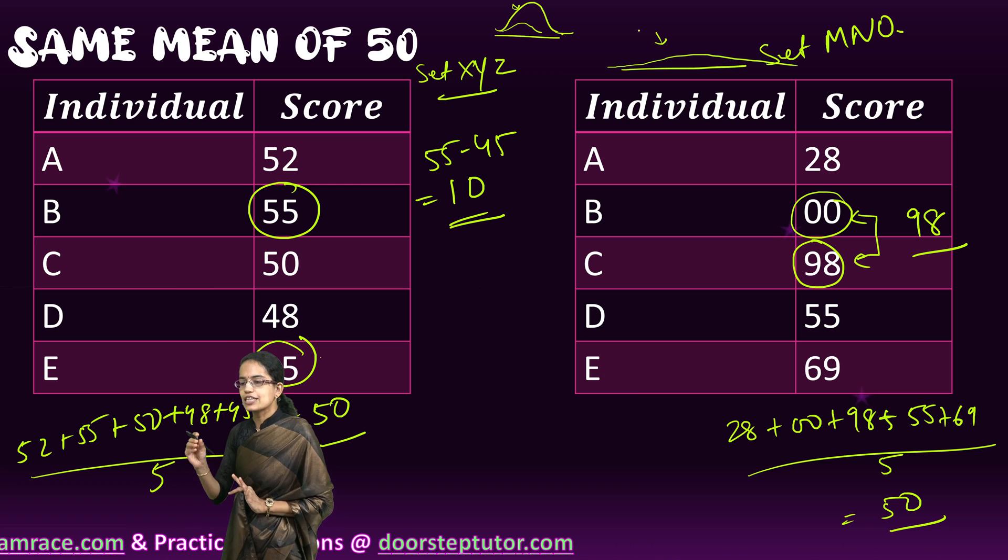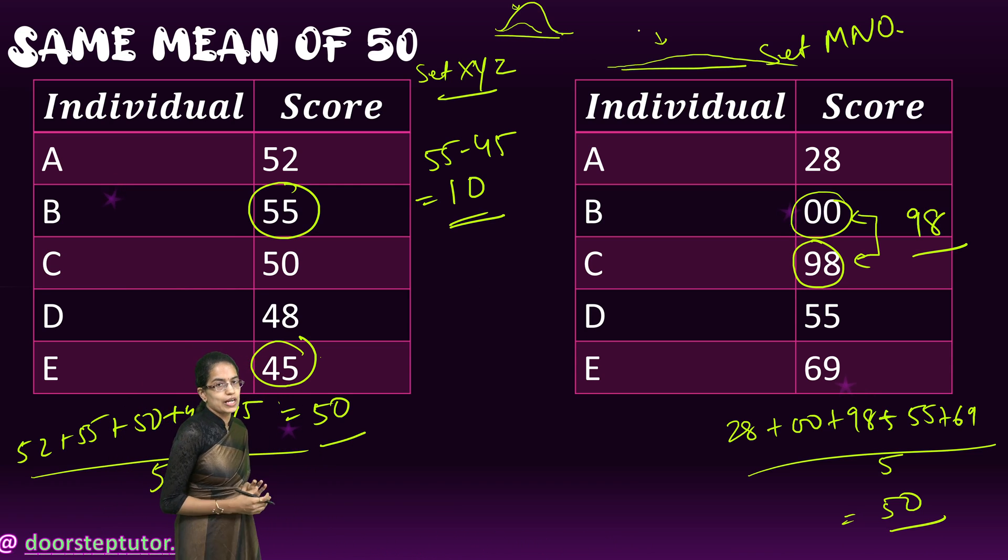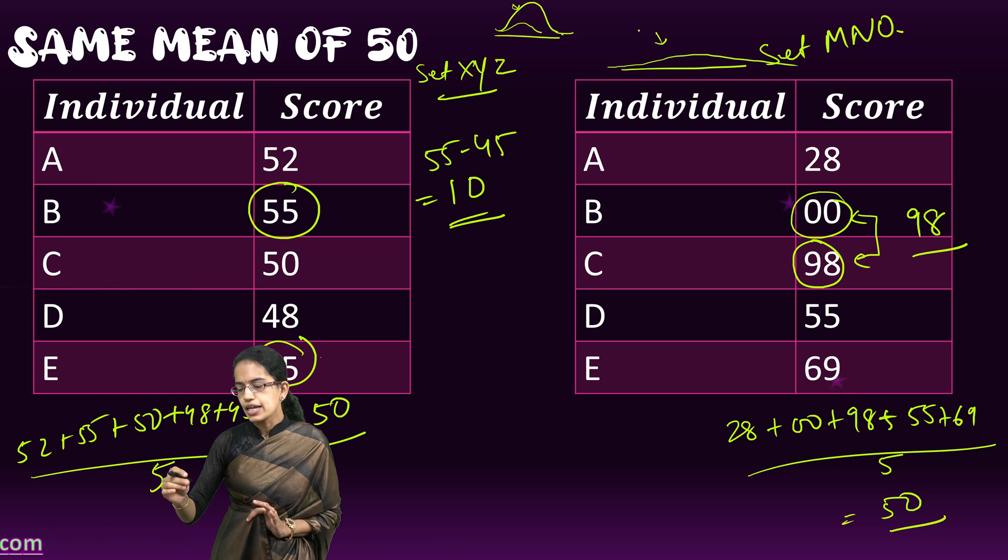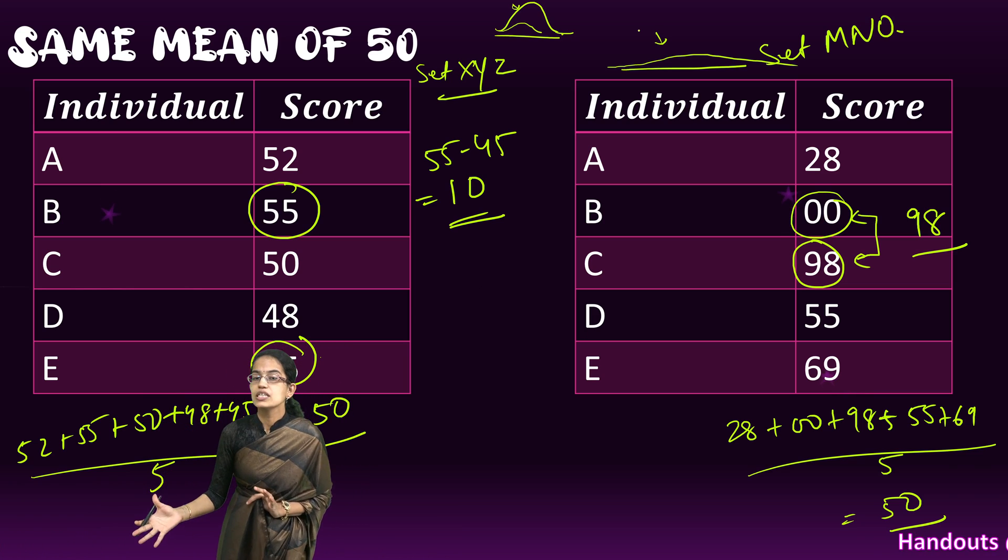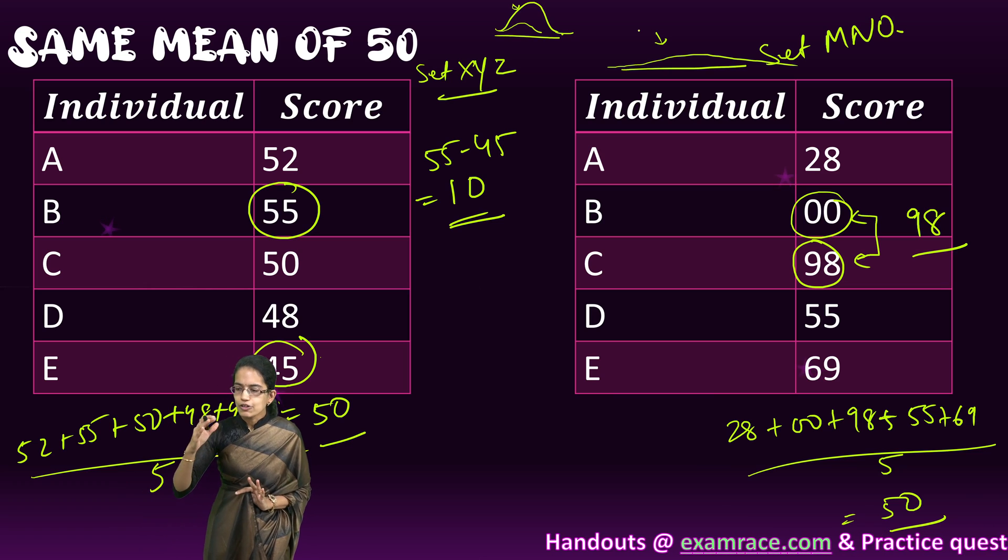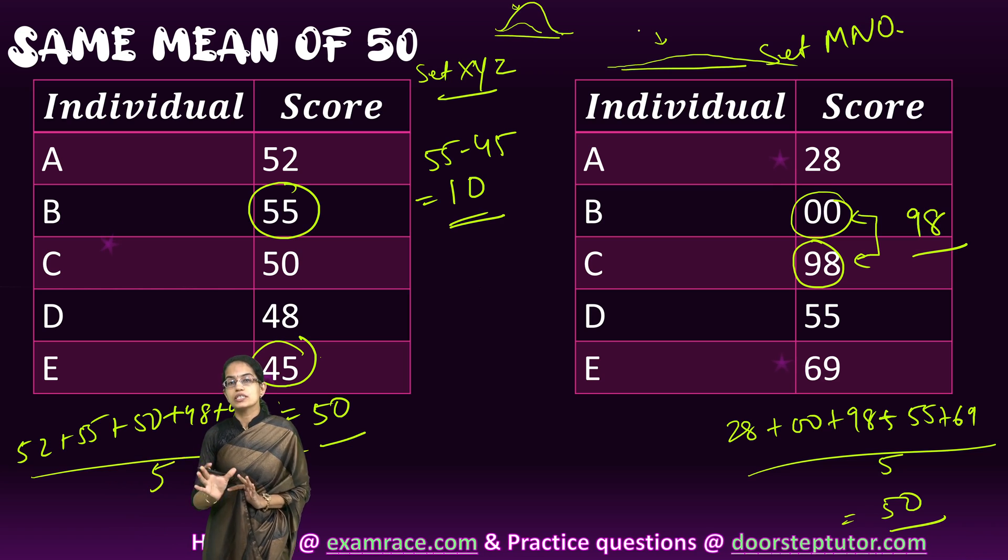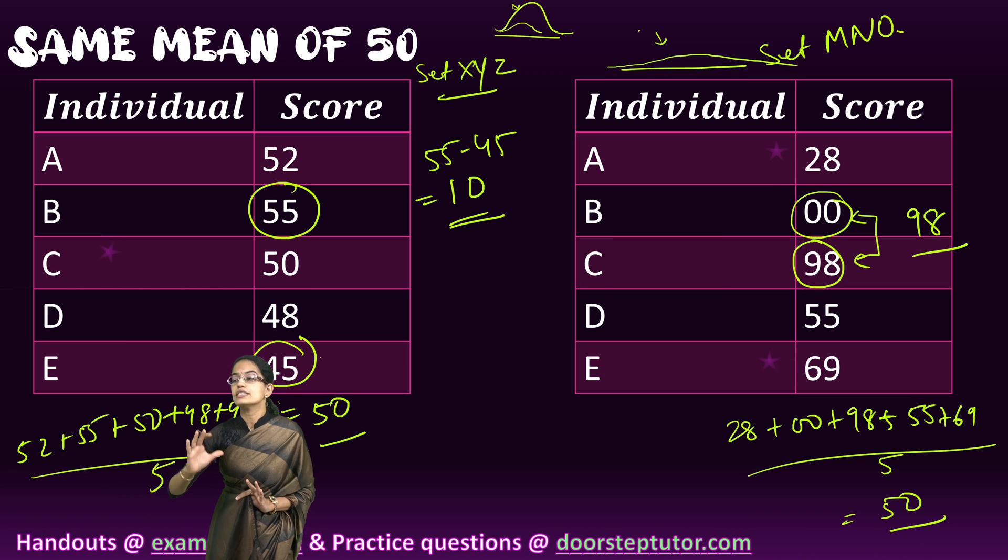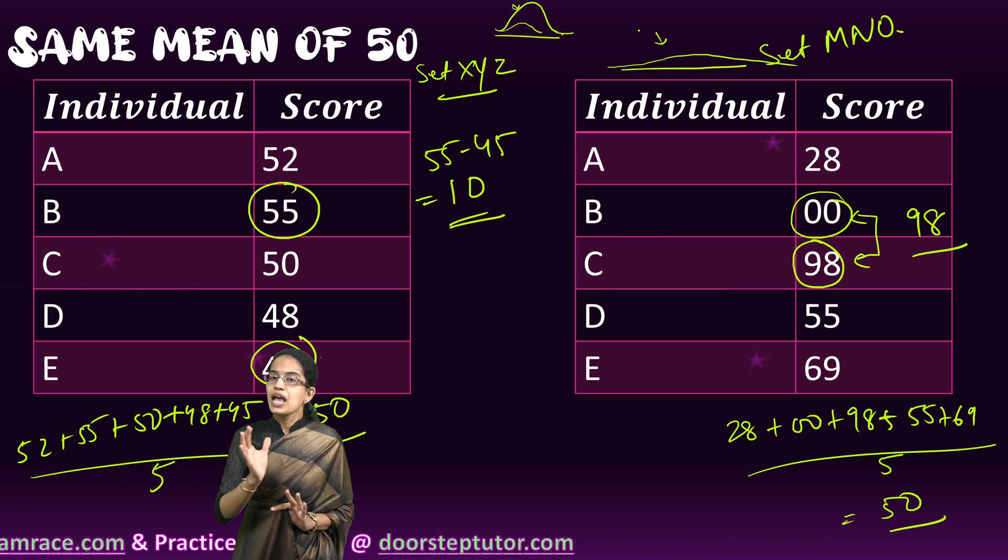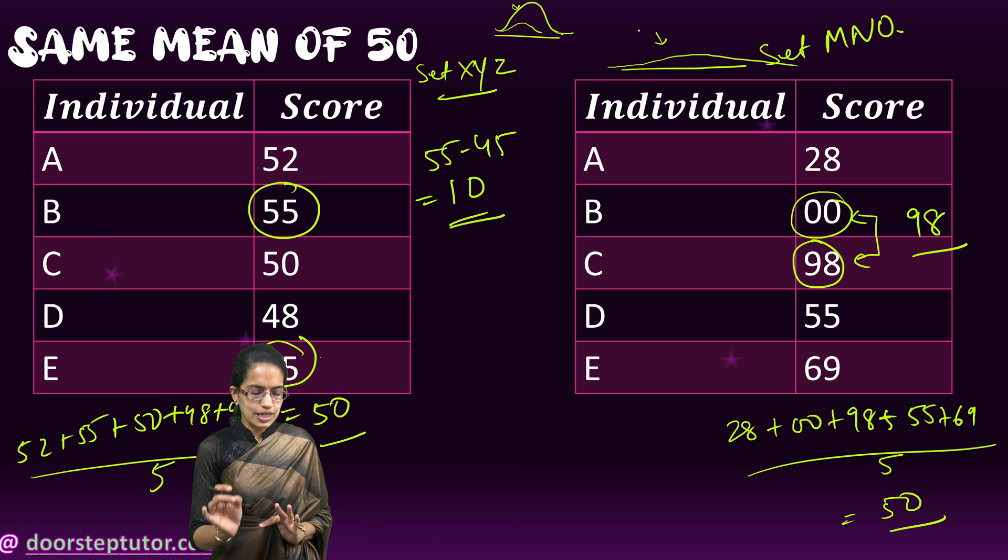Why is dispersion important? Dispersion gives us an idea about the type of series, the composition and distribution within the series, and it also helps us compare the homogeneous nature of the data or the stability within the data. Therefore dispersion is very important and essential to understand.